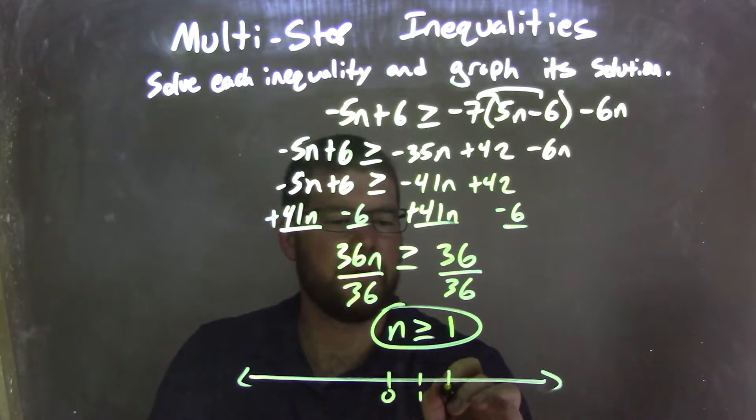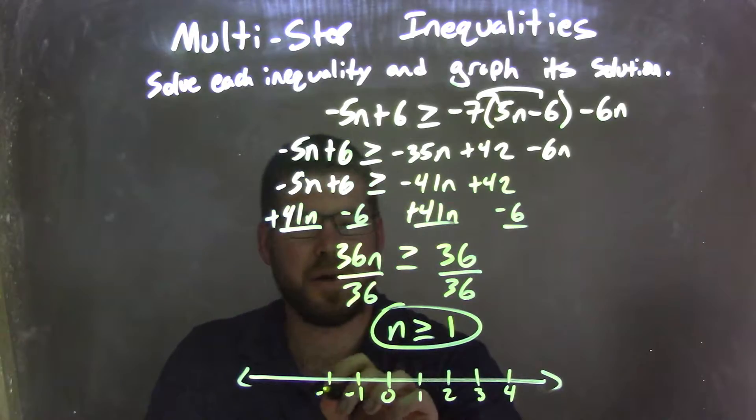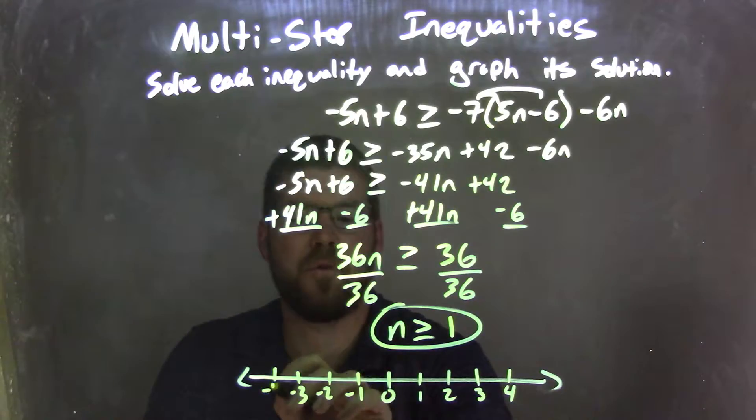So we have 0, 1, 2, 3, 4. And negative 1, negative 2, negative 3, negative 4.